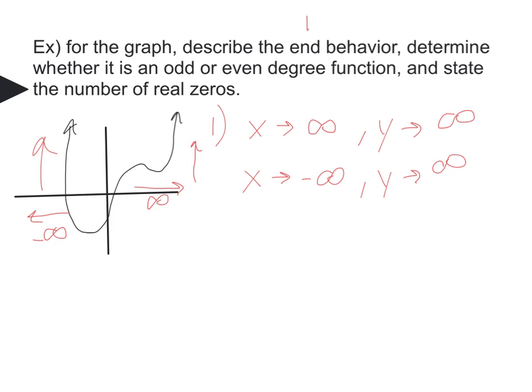And then when you look at that table, if it's an even degree function, it's going to finish in the same direction going both ways. And if it's an odd, it'll be opposite. As x approaches negative infinity, it would end low, and as x approaches positive infinity, it would end high. That would be an odd degree. In this case, since they both end in the same direction, this is going to be an even degree.